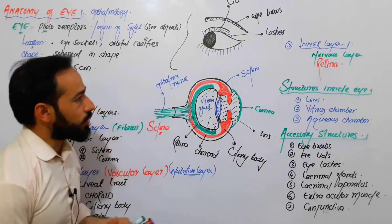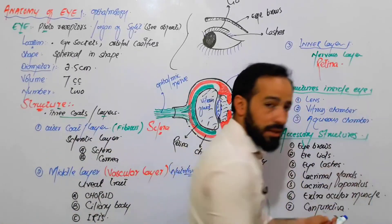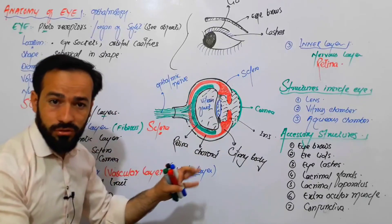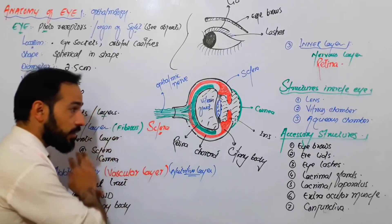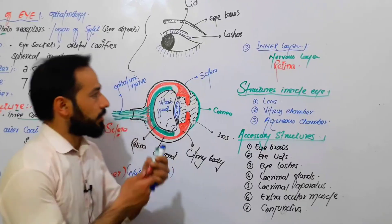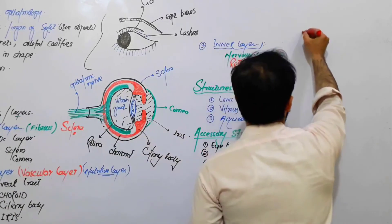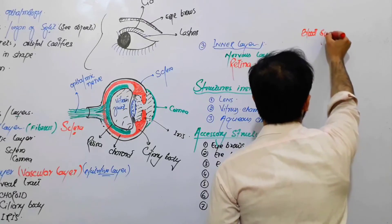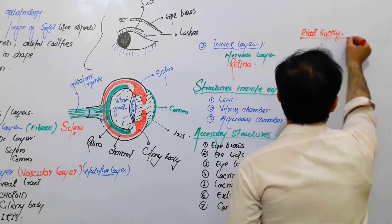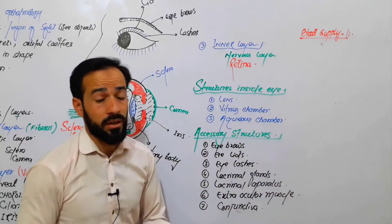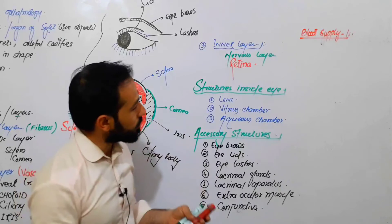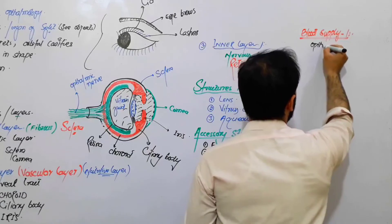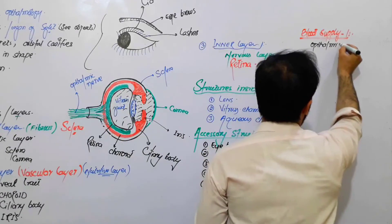What is the blood supply of the eye? This is a general introduction — we will have a full lecture on the blood supply of the eye. The eye is supplied by the ophthalmic artery, and we will discuss all the branches of this artery in great detail.